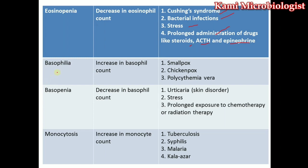High basophil count is called basophilia, occurring during smallpox, chickenpox, and polycythemia vera. Decreased basophils, called basopenia, occurs during skin disorders such as urticaria, stress conditions, and prolonged exposure to chemotherapy or radiotherapy.